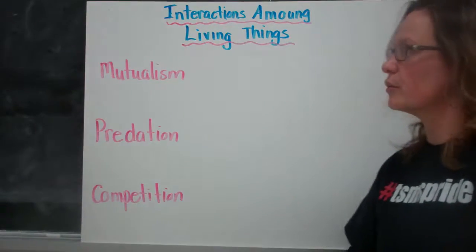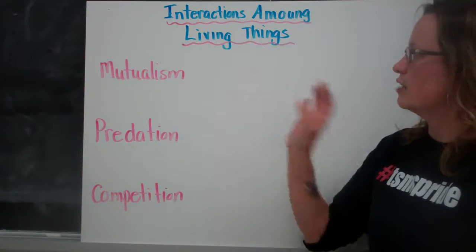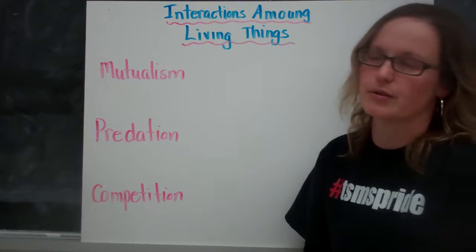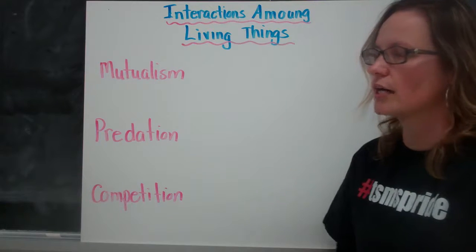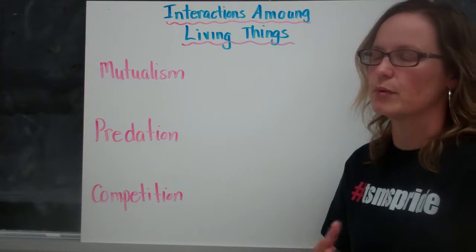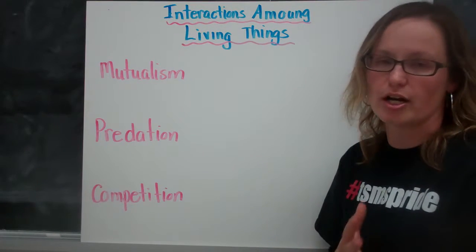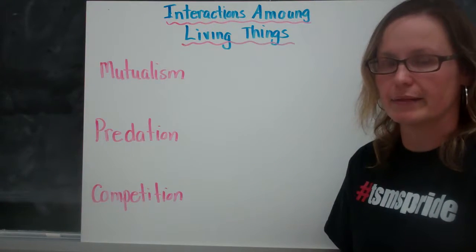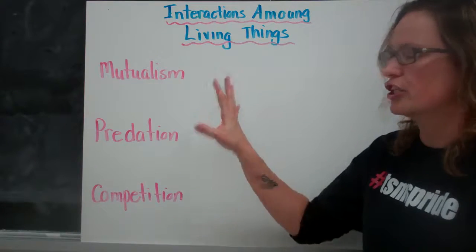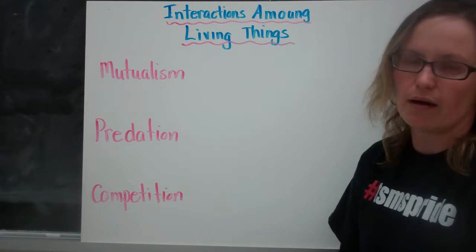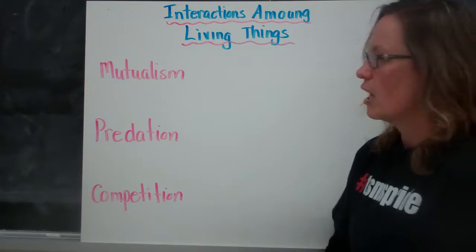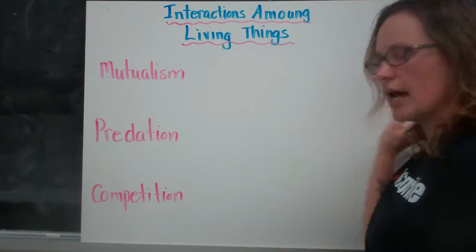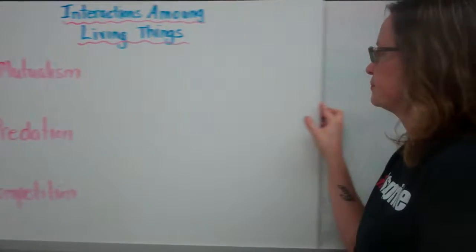For this video I'm going to review the interactions among living things in an ecosystem. We've talked about the relationship and the interactions between abiotic and biotic elements, but I'm going to focus on those biotic elements. I'm going to discuss mutualism, predation, and competition.